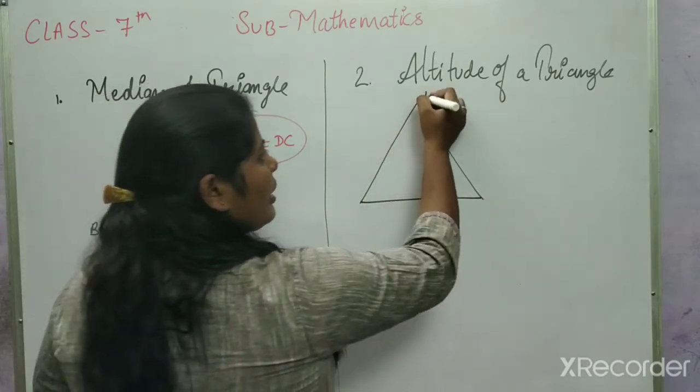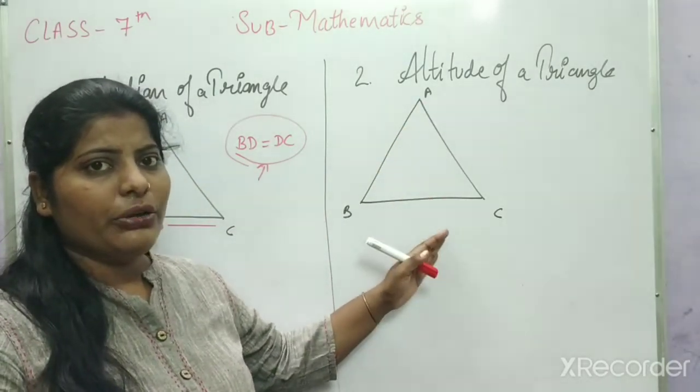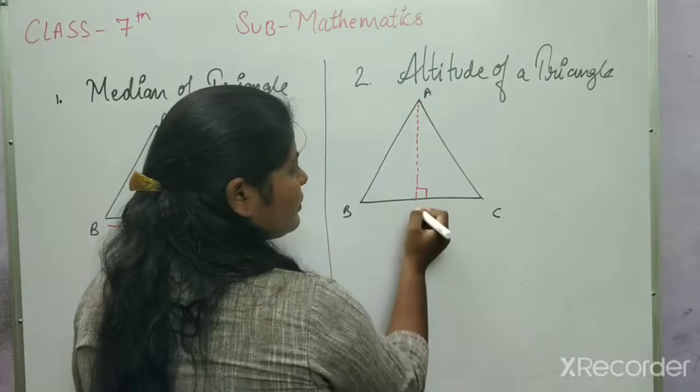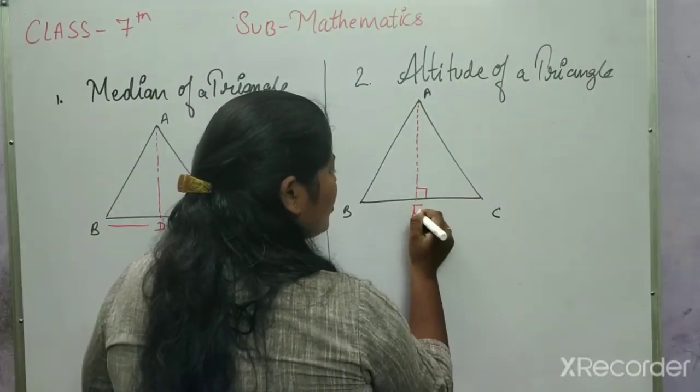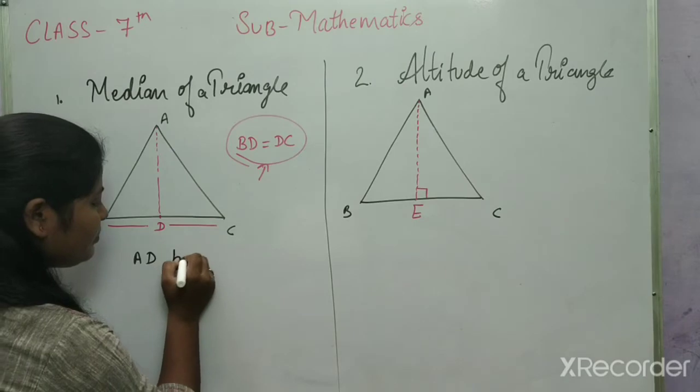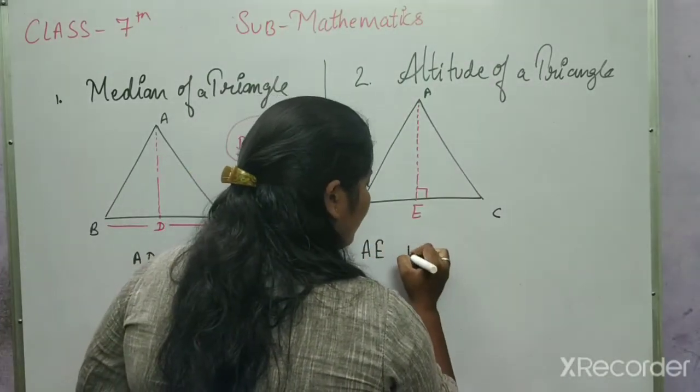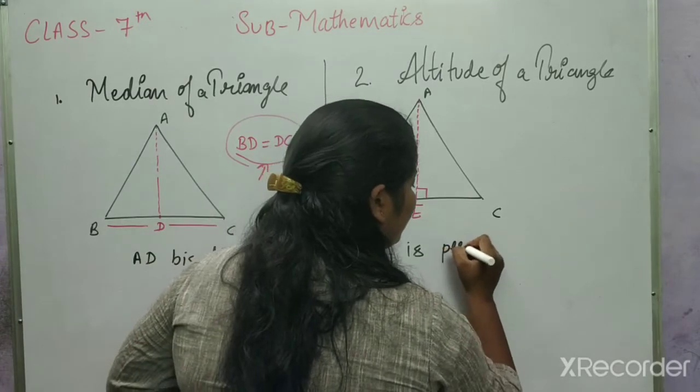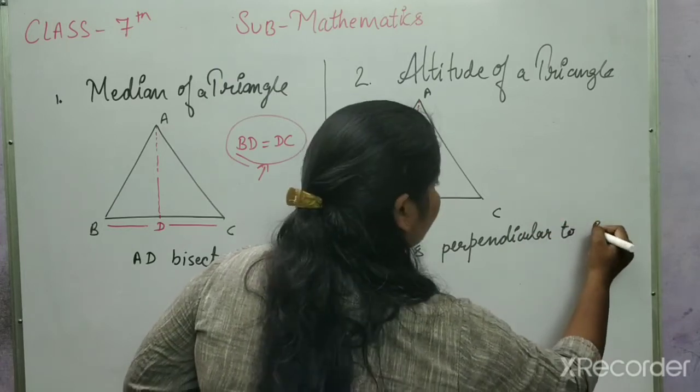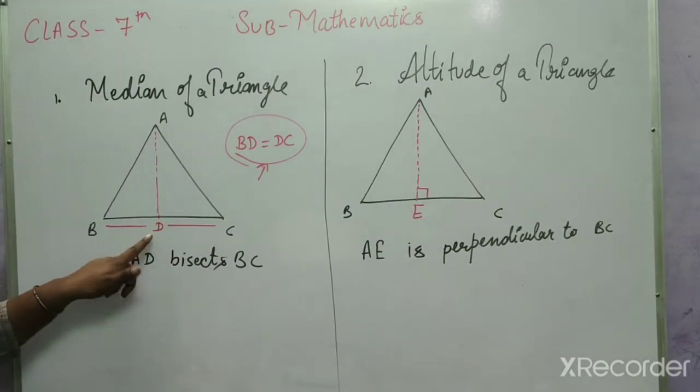And in altitude, it is a triangle ABC. From a vertex, draw a perpendicular to opposite side. If I draw a perpendicular and this is point E, then AD bisects BC and AE is perpendicular to BC.